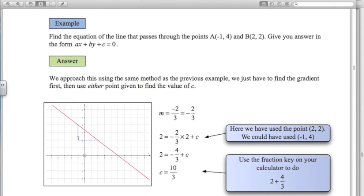I've worked out the gradient. Down 2 and across 3. So the gradient is minus 2 thirds. And then I just choose one of those points to use here. I could have chosen minus 1, 4. But I've put in 2, 2. X value of 2, Y value of 2. So I've used point B. That gives me a C value of 10 over 3.